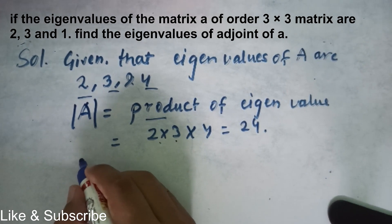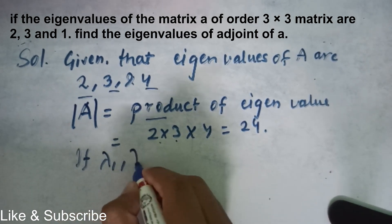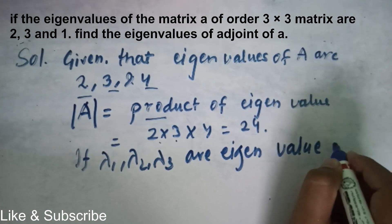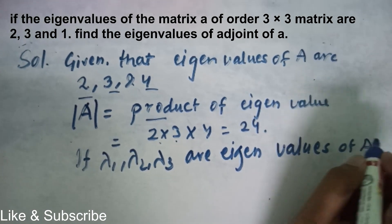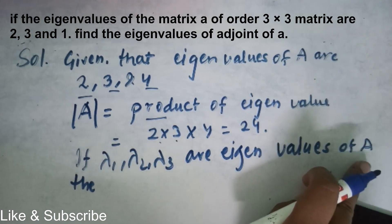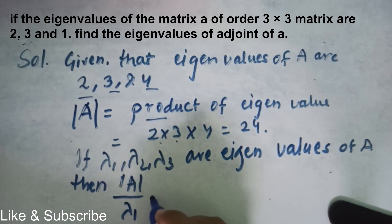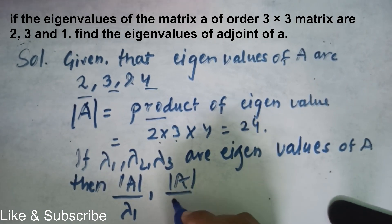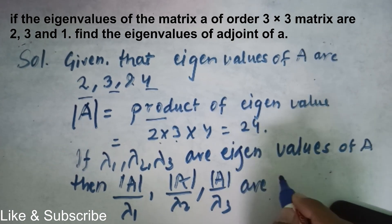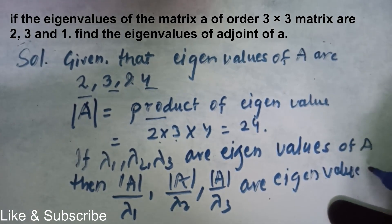We denote eigenvalues as lambda. So we can say that if λ₁, λ₂, λ₃ are eigenvalues of matrix A, then the eigenvalues of its adjoint matrix are: determinant of A divided by λ₁, determinant of A divided by λ₂, and determinant of A divided by λ₃.